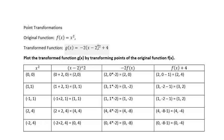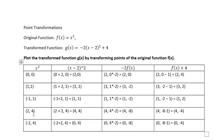We have a vertical transformation, a horizontal transformation, a scaling transformation, and a reflection across the x-axis. To work with points, we start with points from the original function x². If f(x) = x², then points on the graph are (0,0), (1,1), (-1,1), (2,4), and (-2,4).